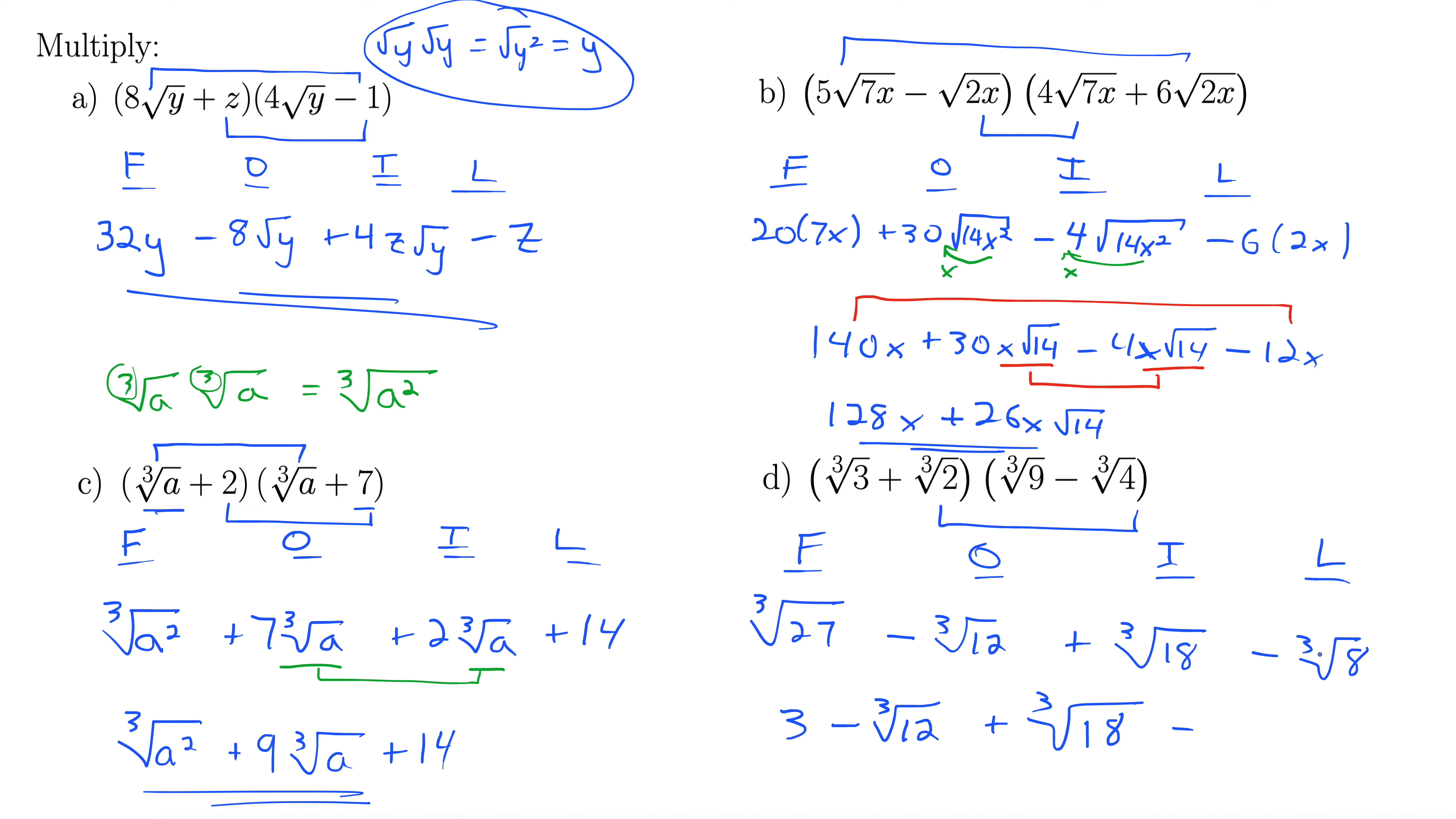But cubed root of 8 is 2, so minus 2. Then we can combine like terms. We just have the 3 and the 2. 3 minus 2 is 1, so our final answer here is 1 minus cubed root of 12 plus cubed root of 18. Note that we can't combine the cubed root of 12 and 18 in any way because those are different radicals. They do not combine. There we go. Thank you.